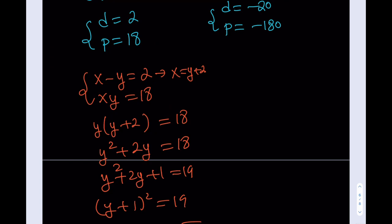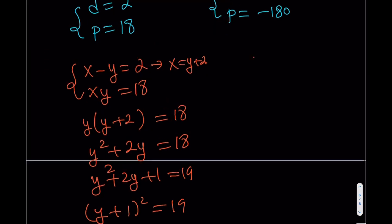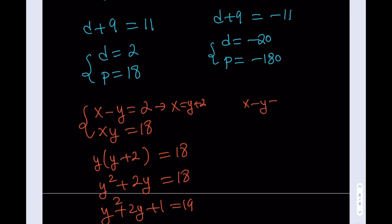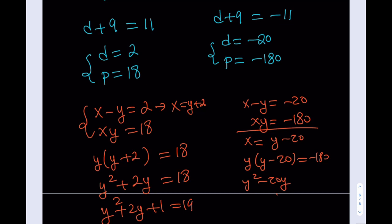This one is going to give you x minus y is equal to negative 20, and xy is equal to negative 180. If I go ahead and substitute x, replace x with y minus 20, that's going to look like y times y minus 20 is equal to negative 180. And then from here, I should be getting y squared minus 20y. And as you know, you know the rest of the story. Basically, you're not going to get real solutions from here.